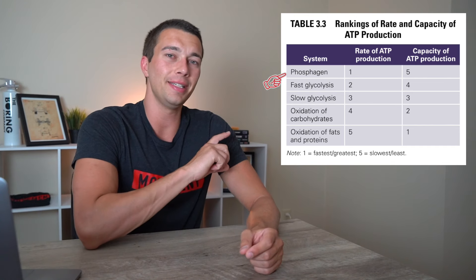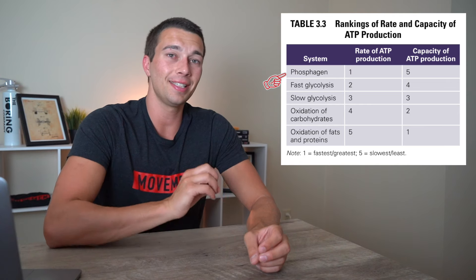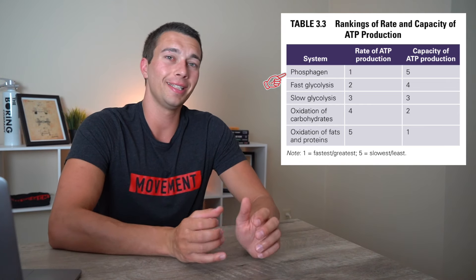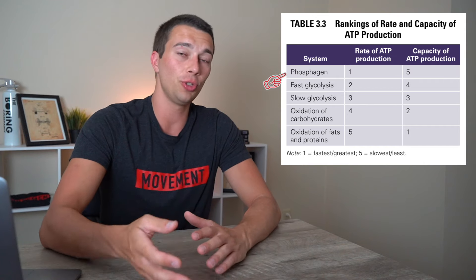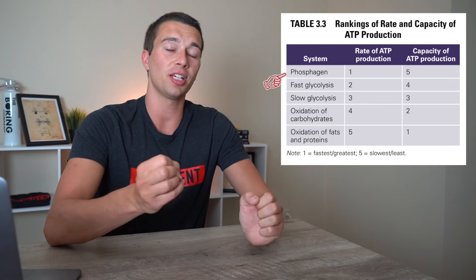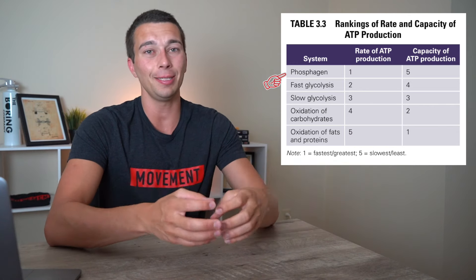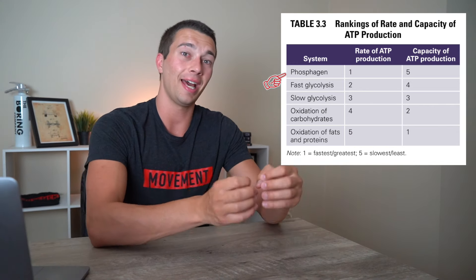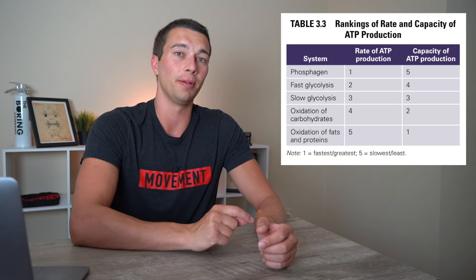The ATP-PC system here is going to produce ATP at the fastest rate. This means that we're going to get ATP almost instantly. Within the first one to two seconds of exercise, we're going to be starting to produce ATP by splitting phosphocreatine molecules and basically giving that phosphate to an ADP to reform ATP. That happens right in the muscle very quickly, and it can provide us with immediate energy.